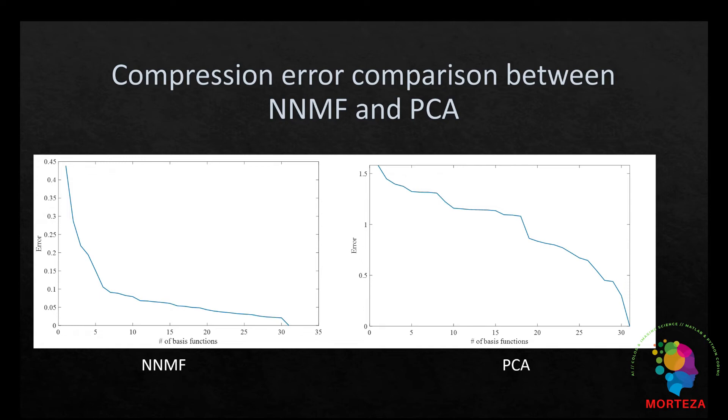Here is the error of reconstruction versus the number of eigenvectors or basis functions using NNMF, and on the right is the same thing but using PCA. You can see that in both cases the error goes down as the number of basis functions increases in the compression and reconstruction process. But the rate at which the error goes down is not the same.